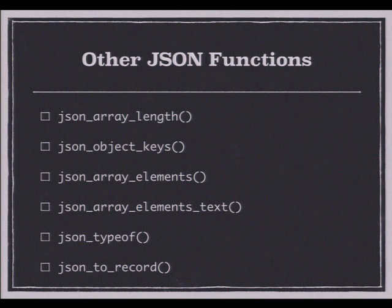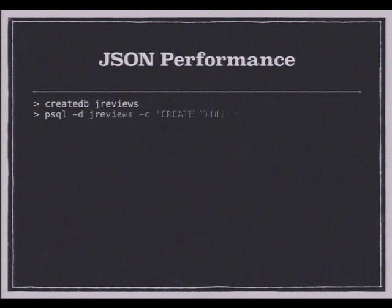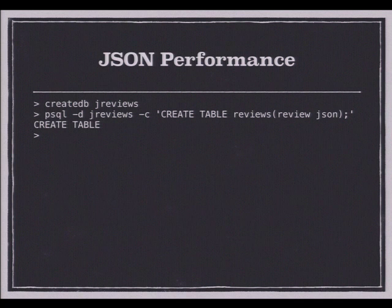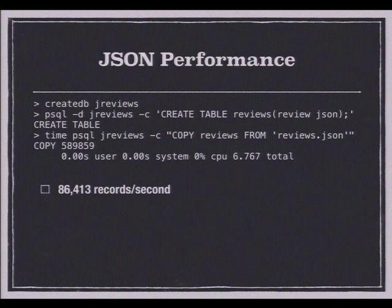json_typeof will tell you the type of a JSON value: string, null, boolean, object, or array. I loaded the same Amazon review data from Citus, which is nested JSON — a little easier to load than HStore. I created a table called reviews with a single JSON column. Loading was quite fast — about 86,000 records per second compared to 68,000 for HStore. The reason this is faster is that it's validating the JSON but then just storing it as text, not converting to an internal representation.